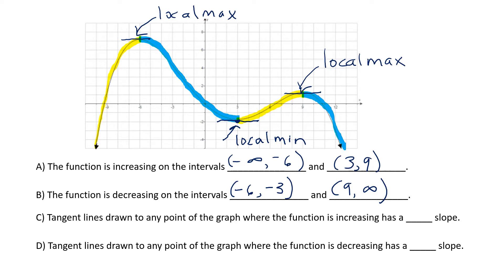Now let's look at the graph some more. Tangent lines drawn to any point where the function is increasing — we're looking at portions of the graph highlighted in yellow. If you draw any tangent line on any point where the graph is rising, you'll notice it's moving upwards, so the slope is positive. And if you draw a tangent line anywhere the graph is falling — meaning the function is decreasing — the tangent line goes down, so the slope is negative.